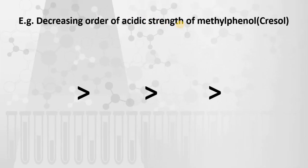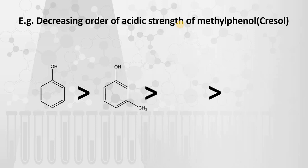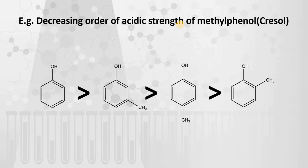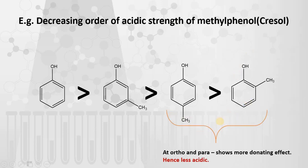For example, consider methylphenol, also called cresol. The decreasing order of acidic strength is: simple phenol is most acidic, followed by meta-cresol, then para-cresol, and ortho-cresol is least acidic. The lower acidity of ortho- and para-cresol is due to the stronger donating effect at those positions.